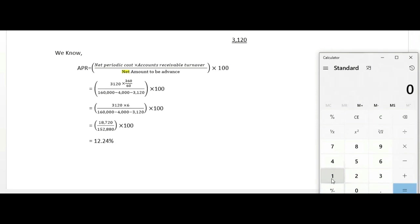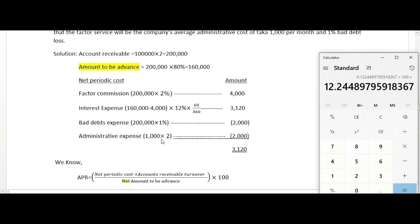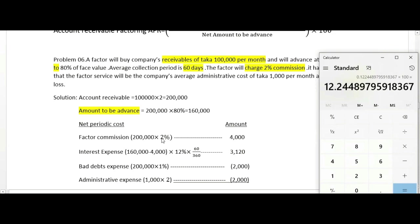After completing the calculation, multiplying by 100 gives us the final answer of 12.24 percent. The APR for this account receivable factoring is 12.24 percent.